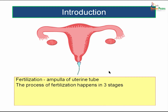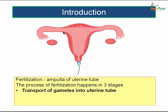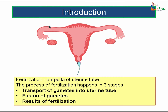The process of fertilization actually happens in three main stages. The first one is transport of gametes into the uterine tube. We have mainly two gametes: the sperm from the father and the mature ovum from the mother. These two gametes should reach the ampulla of the uterine tube. In the ampulla, these two gametes will fuse, resulting in fertilization and the effects of fertilization. These are the three main phases happening during fertilization.